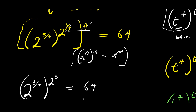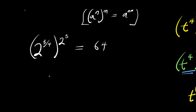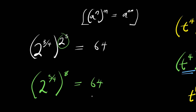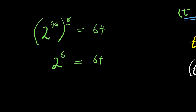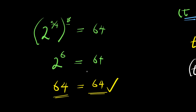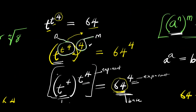This equals 64. We get 2 to the power of 3 over 4, raised to the power of 2 to the power of 3, which is 8. Multiplying: 8 times 3 over 4 gives 24 over 4, which is 6. So we have 2 to the power of 6, and 2 to the power of 6 is 64, which equals 64. This proves the answer is correct. Thank you and goodbye.